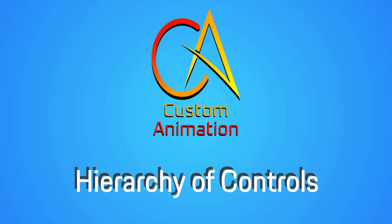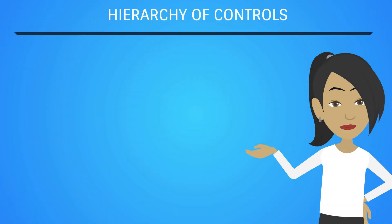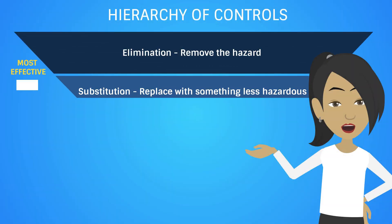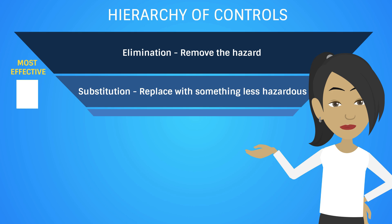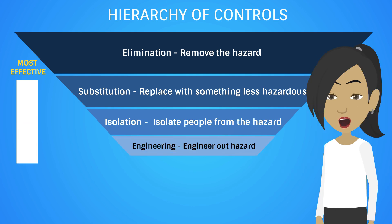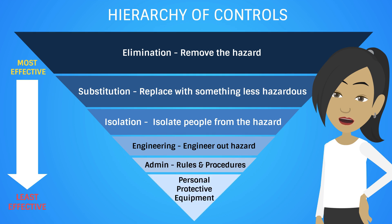Welcome to Custom Animation's presentation on the Hierarchy of Controls. The Hierarchy of Controls provides us with a systematic approach to reducing the risk of workplace hazards. It lists control groups, starting with the most effective and descending to the least effective.